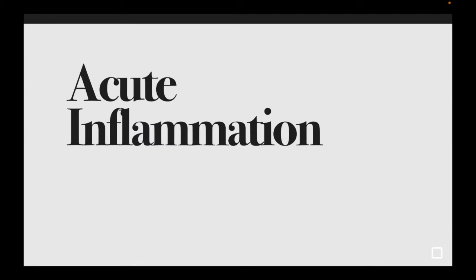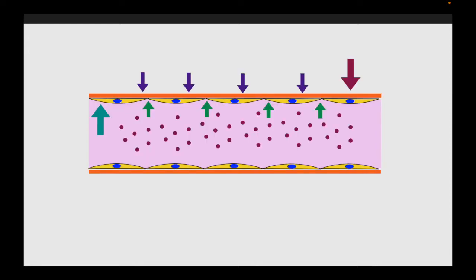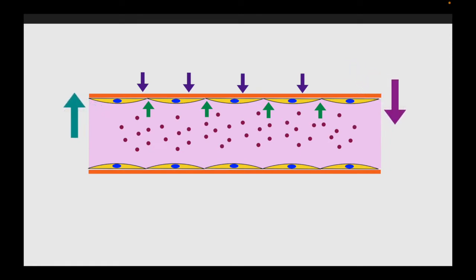In any acute inflammatory response you can characterize the events as vascular changes and cellular changes. Normally in a blood vessel, cells and proteins are in the center, and plasma stays inside the vessel — either because of the oncotic pressure exerted by plasma proteins or the hydrostatic pressure exerted from outside. This balance maintains fluid in the intravascular space.